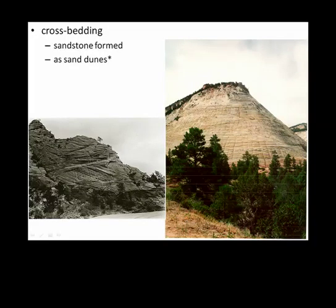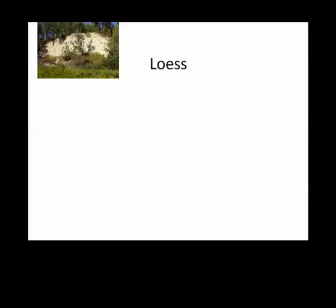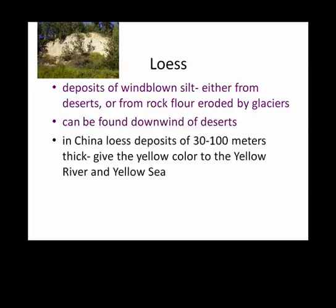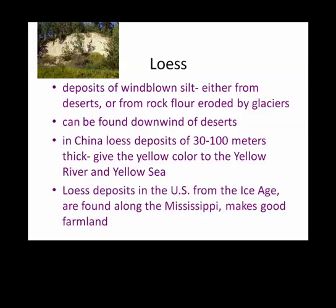If sand is deposited in sand dunes, where is all that silt and clay deposited from a dust storm? It's deposited as loess. Loess is a deposit of wind-blown silt from a desert, or it could be rock flour eroded by glaciers. You find it downwind of deserts. In China, they have loess deposits 30 to 100 meters thick — that's why we call it the Yellow Sea and the Yellow River, because the loess deposits are yellowish. In the United States, after the Ice Age, we had lots of rock flour, and as a result along the Mississippi we have loess, which makes great farmland.